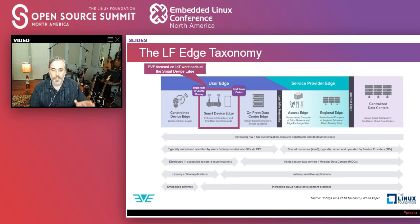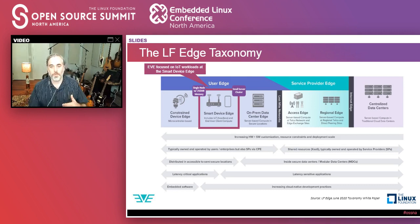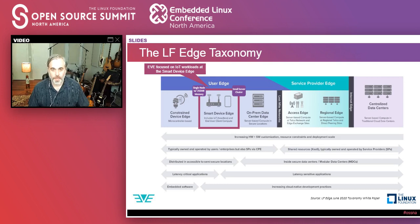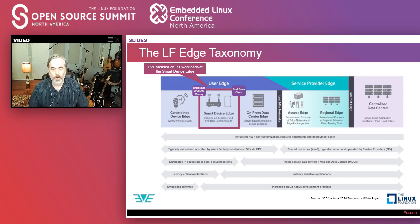Think of Project Eve as doing for the IoT edge what Android did for the mobile component of the smart device edge. Very fragmented — you need to support all these different technologies. We want to create within LF Edge a universal abstraction engine for this type of edge compute hardware: whether it's a gateway, a server, a hub, a router, any hardware capable of supporting an abstraction layer. On top of that, you run apps in the form of VMs and containers.